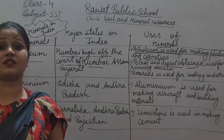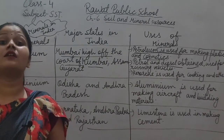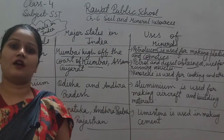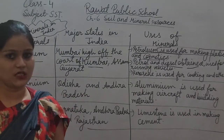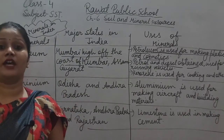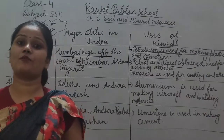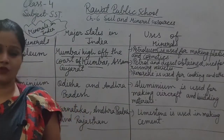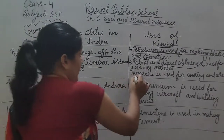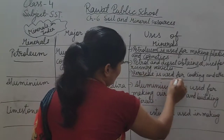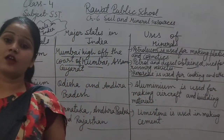Vehicles like cars, buses, and motorbikes are run by petrol and diesel, and we get petrol and diesel from the petroleum mineral. Also, kerosene is used for cooking and other purposes.